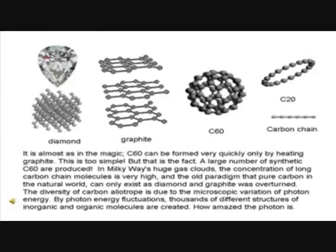C60 can be formed very quickly only by heating graphite. This is too simple, but that is a fact. A large number of synthetic C60 are produced. In the Milky Way's huge gas clouds, the concentration of long carbon chain molecules is very high, and the old paradigm that pure carbon in the natural world can only exist as diamond and graphite was overturned. The diversity of carbon allotropes is due to the microscopic variation of photon energy. By photon energy fluctuations, thousands of different structures of inorganic and organic molecules are created.